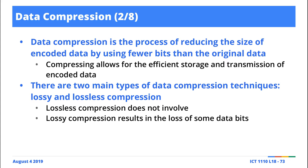Compression is, by textbook definition, nothing more than a process of reducing the size of encoded or processed data by using fewer bits than the original data. So when you compress data, what you're essentially doing is reducing the total number of bits used to represent that data compared to the original size.